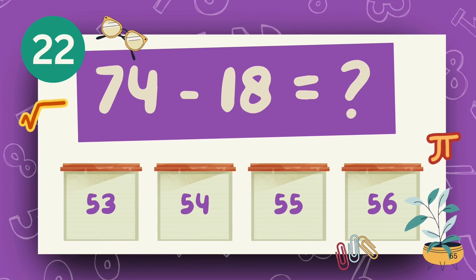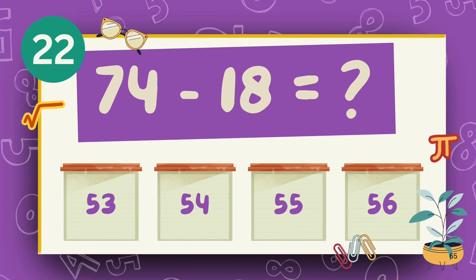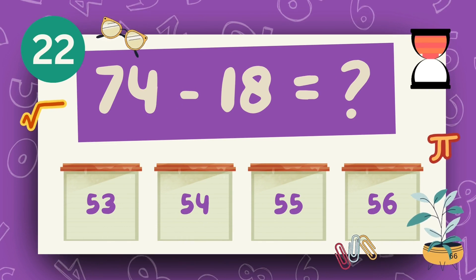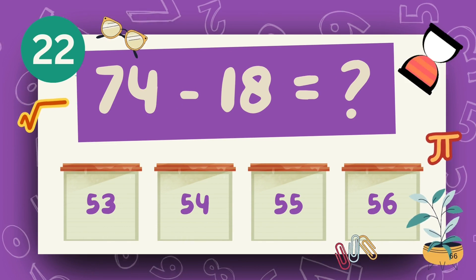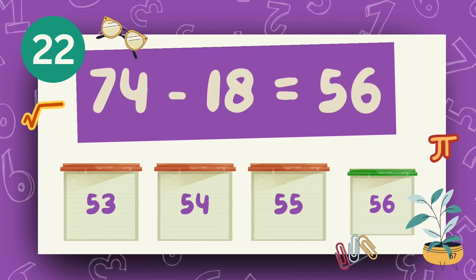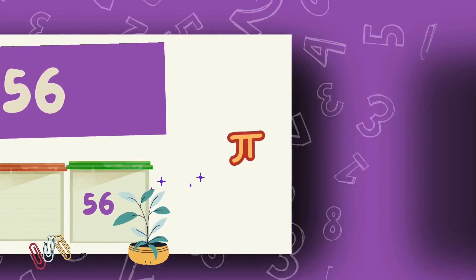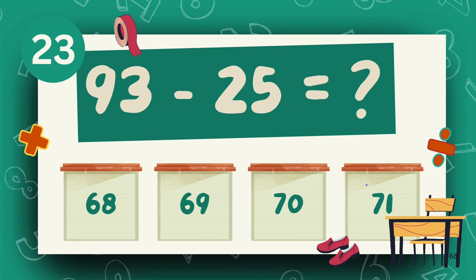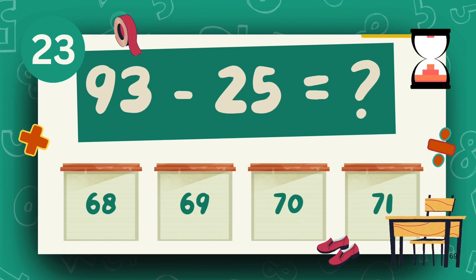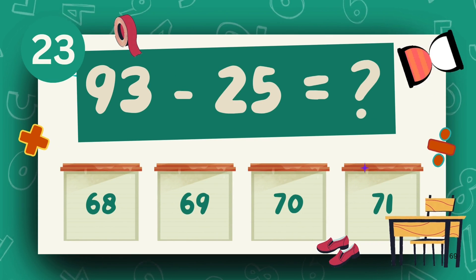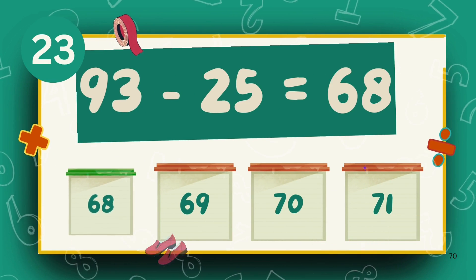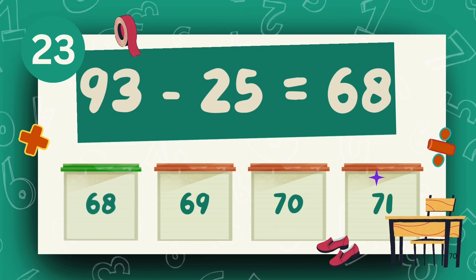What is 74 minus 18? The answer is 56. What is 93 minus 25? The answer is 68.